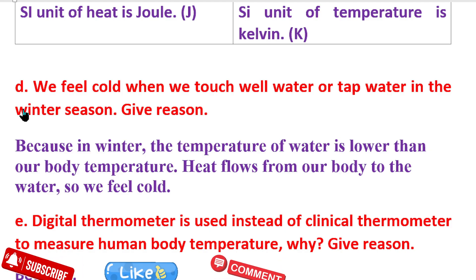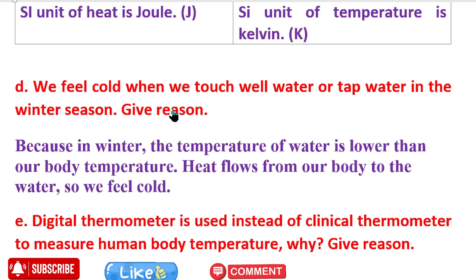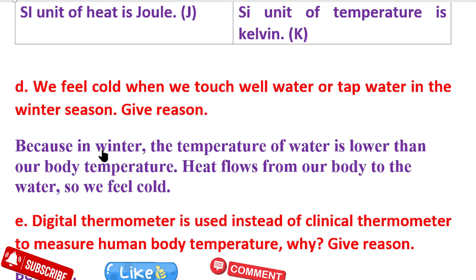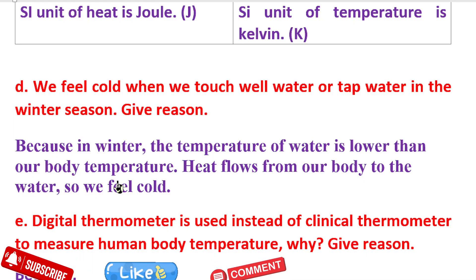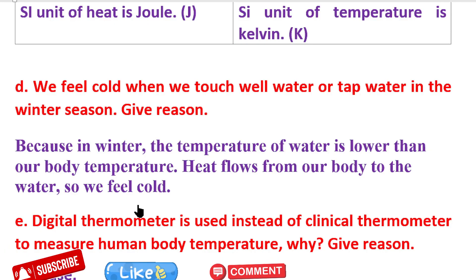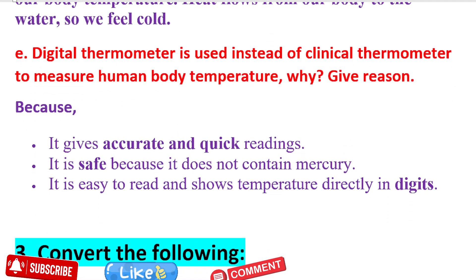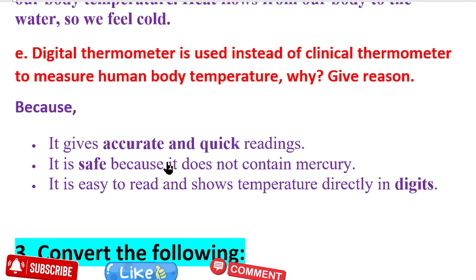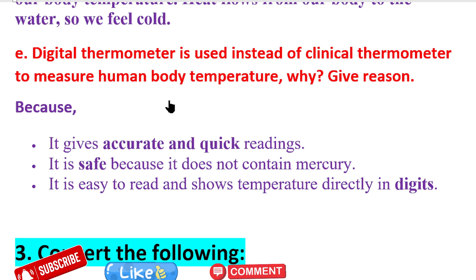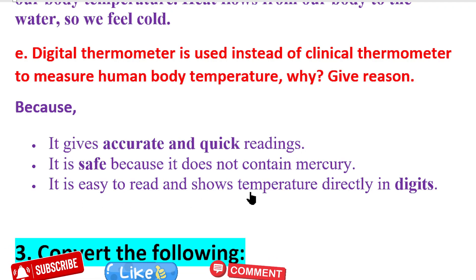We feel cold when we touch well water or tap water in the winter season because the temperature of the water is lower than our body temperature. Heat flows from our body to the water, so our body loses heat and we feel cold. Digital thermometers are used instead of clinical thermometers to measure human body temperature because they give accurate and quick readings digitally, they are safe because they do not contain mercury — which is very harmful and dangerous — and they are easy to read as they display temperature directly in digits.